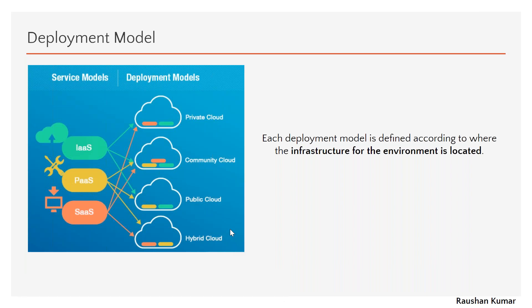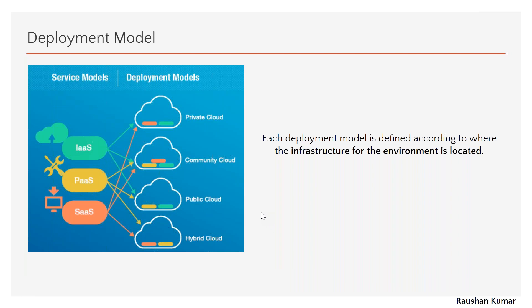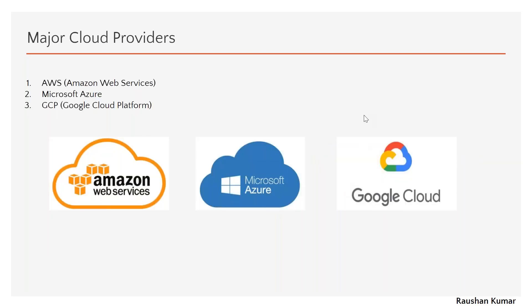In hybrid cloud, your application server might be with one cloud provider while your database or web server is with another. For example, some organizations keep their databases on-premises but host application servers and web servers in the cloud. When infrastructure is located at multiple locations, that's hybrid cloud.